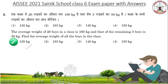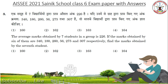Next question: The average marks obtained by 7 students in a group is 226. The marks obtained by 6 of them are 340, 180, 260, 56, 275 and 307 respectively. Find the marks obtained by the 7th student. Answer: 164.